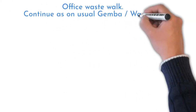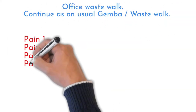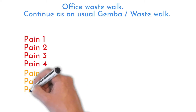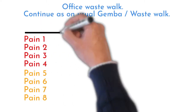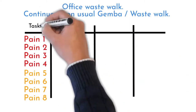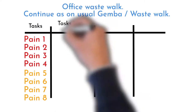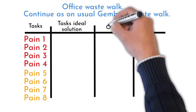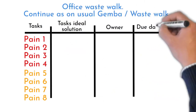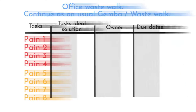Now you have a list of difficulties people are facing — this is a great start. You can continue like in the usual way. List pain descriptions next to each other; it becomes a task list to be resolved. Identify each task's ideal solution, identify the task owner, and set a due date.